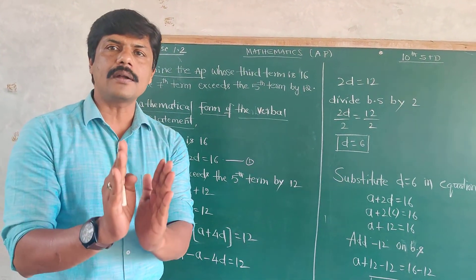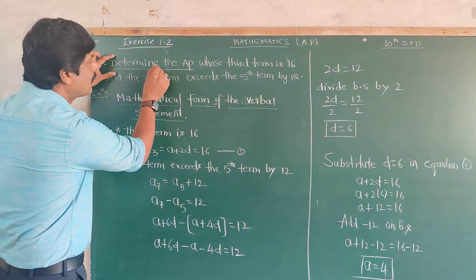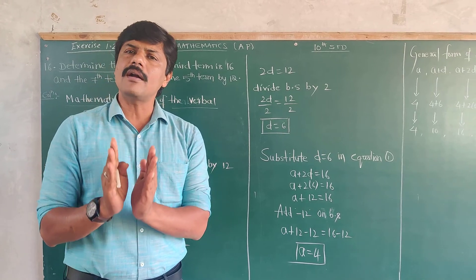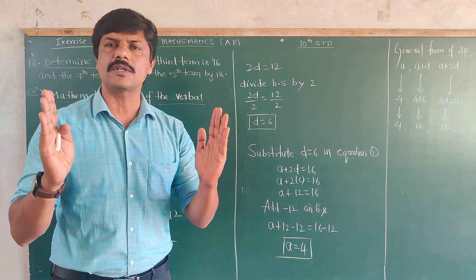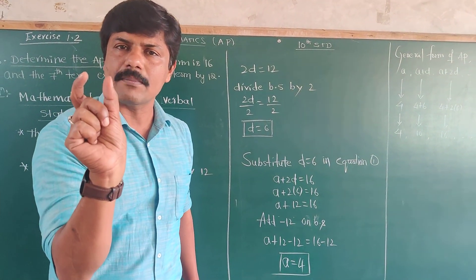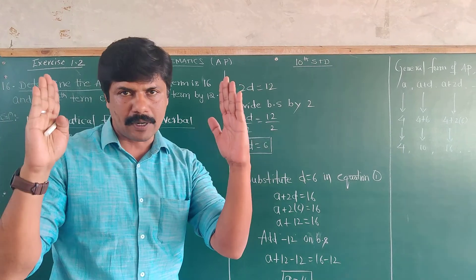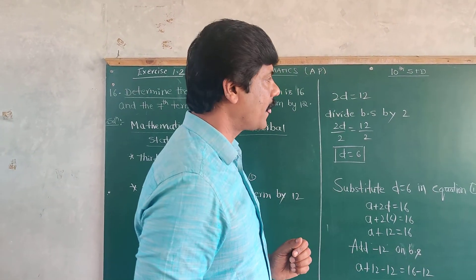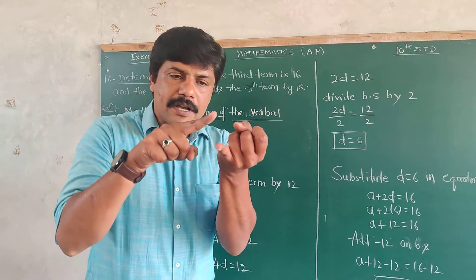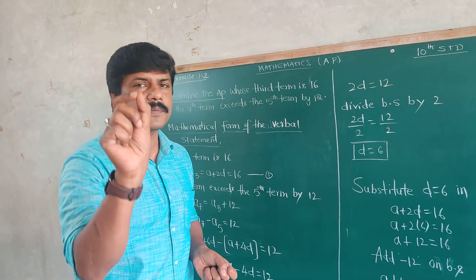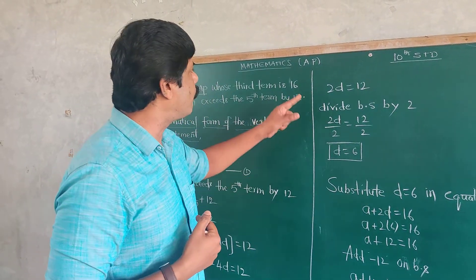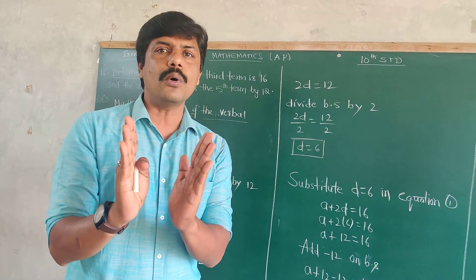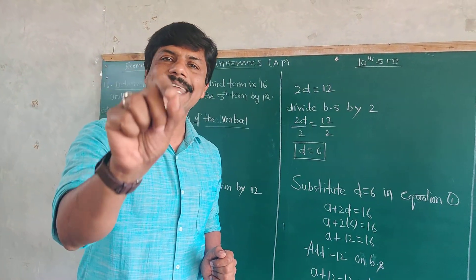Understand the question properly. What we need to find is to determine the AP. To determine the AP, you should know the definition of AP. AP is a set of numbers whose consecutive numbers have a common difference. To know this, we should know the first term and the common difference — these are the two basic things needed to form any AP. So what is required? First term and common difference.